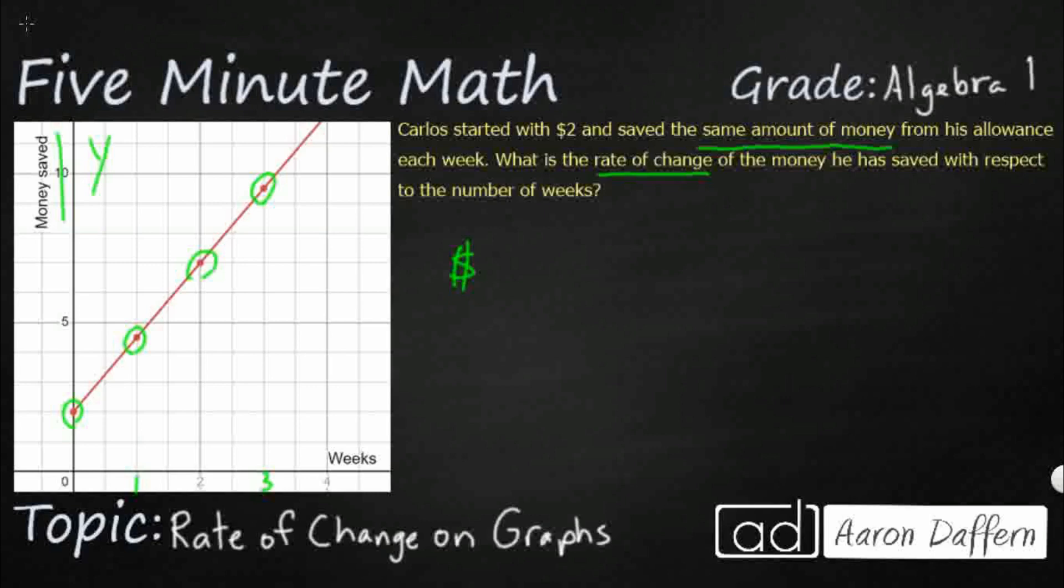So that's a weird way of asking you to find how much money he saves each week. We can view it as a ratio there, money over weeks. My money is going to be on the y-axis and then my number of weeks is going to be on the x-axis. So I'm looking for how much we change in the y-axis over how much we change in the x-axis. Does that look familiar? Hopefully that does because the rate of change is asking you to find the slope.